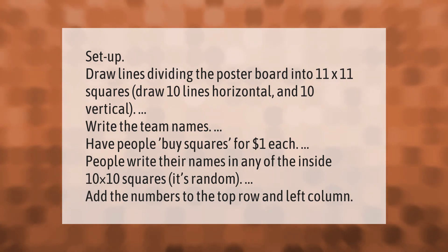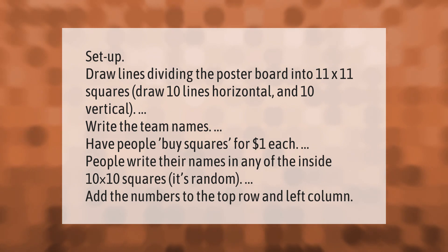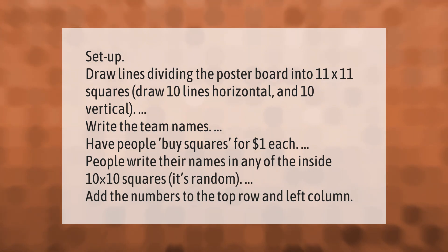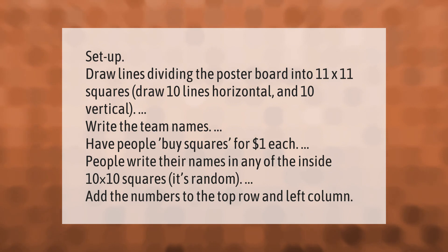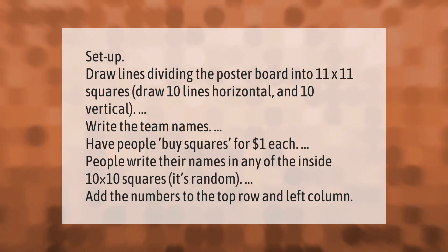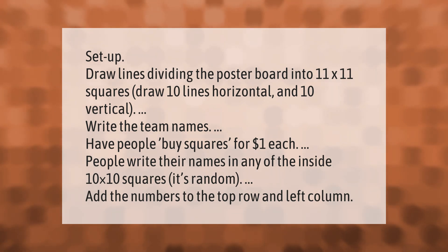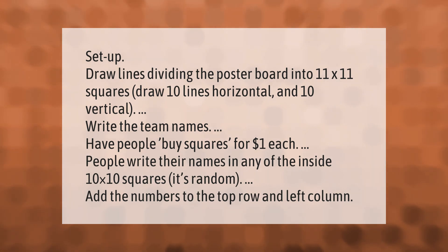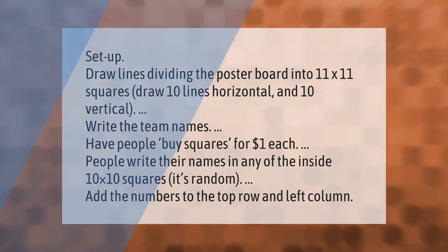Write the team names, then have people buy squares for one dollar each. People write their names in any of the 10 by 10 squares at random. Then add numbers to the top row and left column.